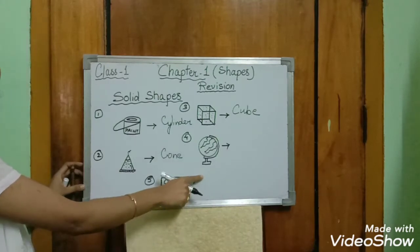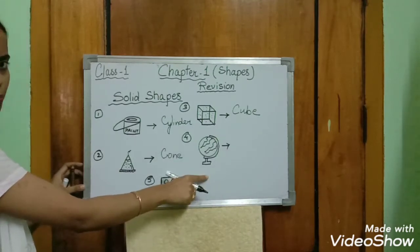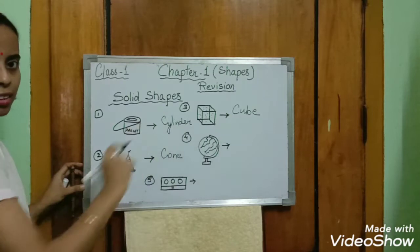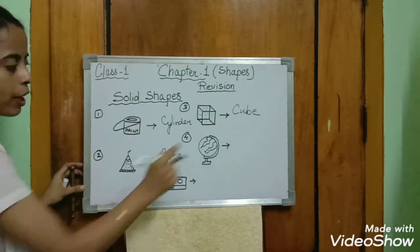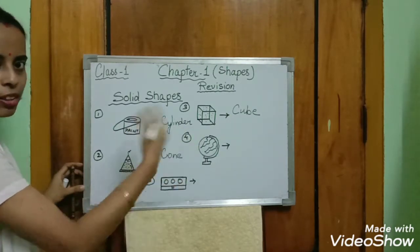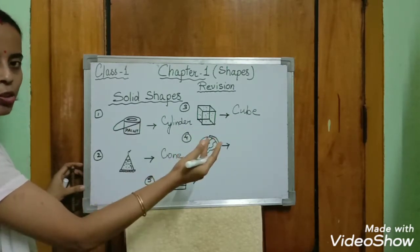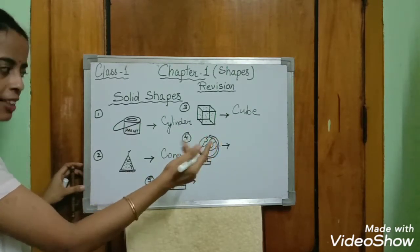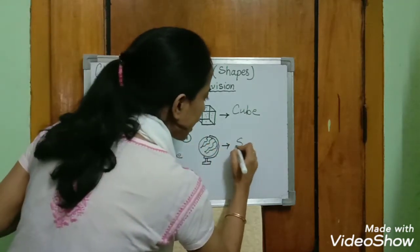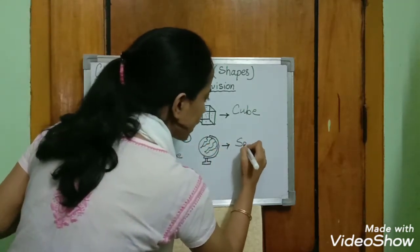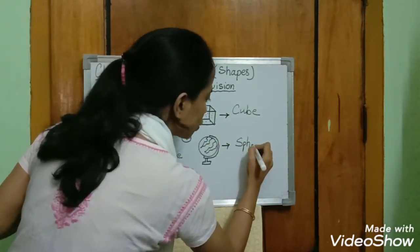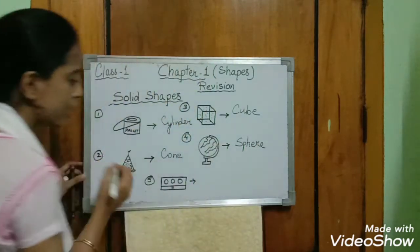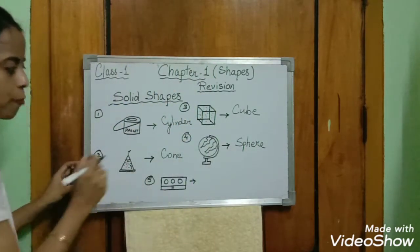The next object is a globe. Look at it — it is round. It is similar to which solid shape? It is a sphere. S-P-H-E-R-E.